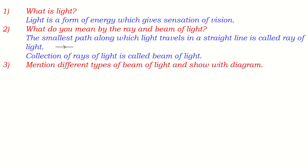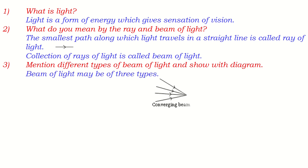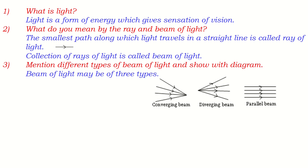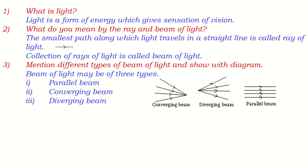Next question: mention different types of beam of light and show with a diagram. There are three basic types of beam of light: number one, parallel beam; number two, converging beam; and number three, diverging beam. Parallel beam is very common, but converging beam and diverging beam come in the study of lens and mirror.